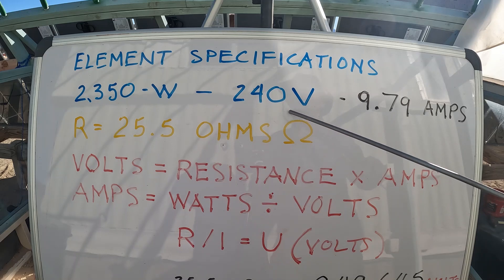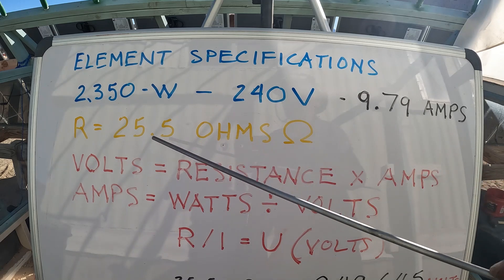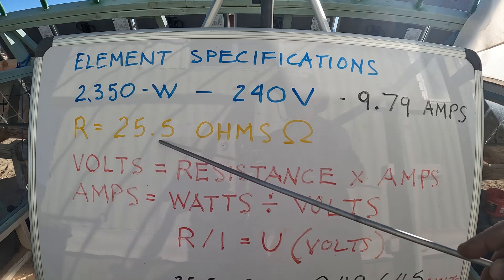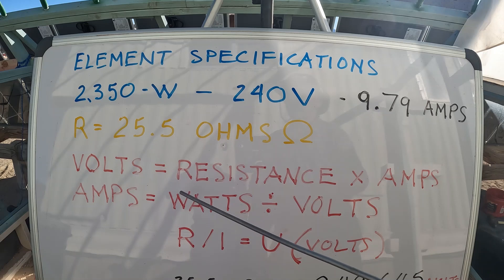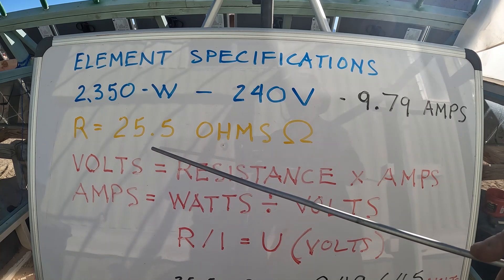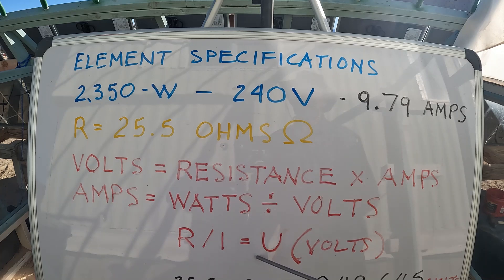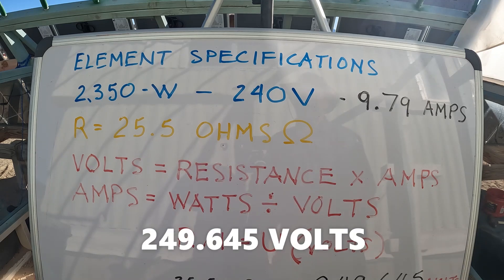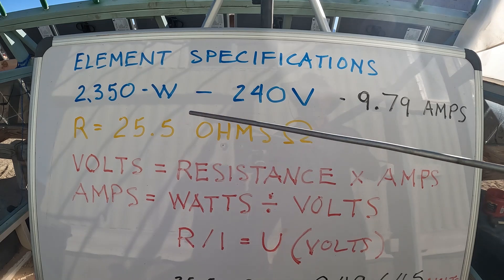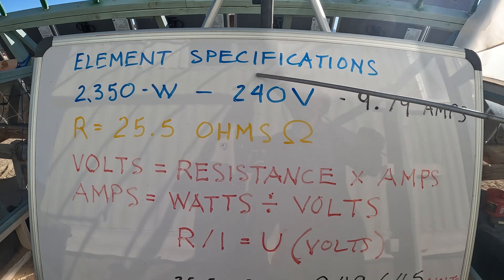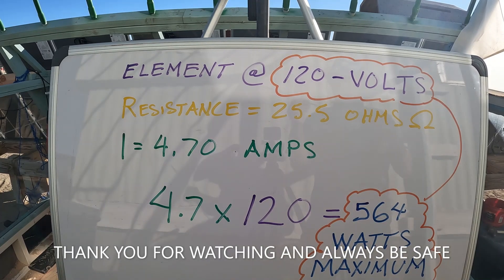With those figures I came up with 9.79 amps. The resistance of that element is 25.5 ohms. So: resistance (25.5) times amps (9.79) equals volts — that comes out to 249.645 volts. That's just a little over the 240-volt specification, which sounds exactly right. That confirms Ohm's Law.